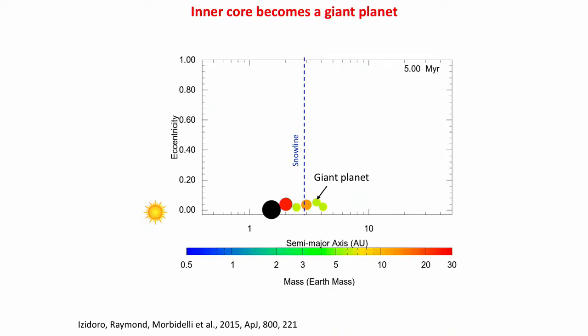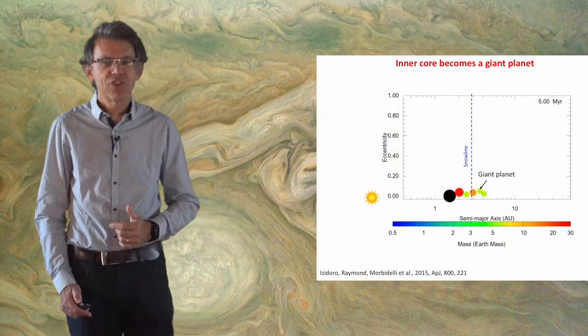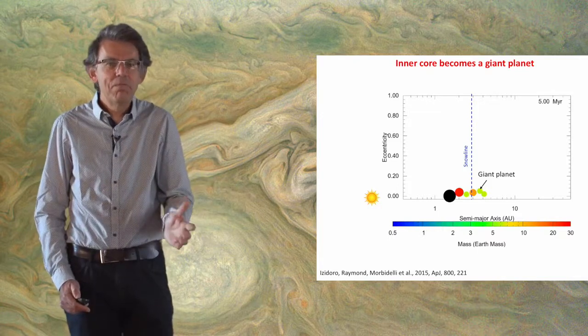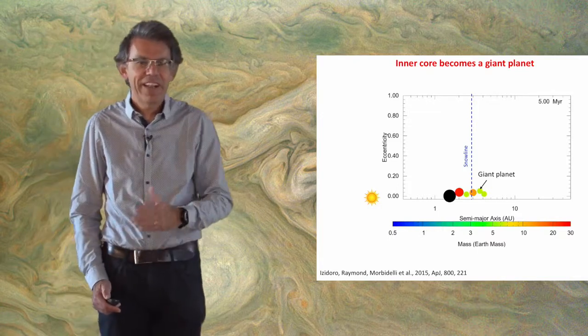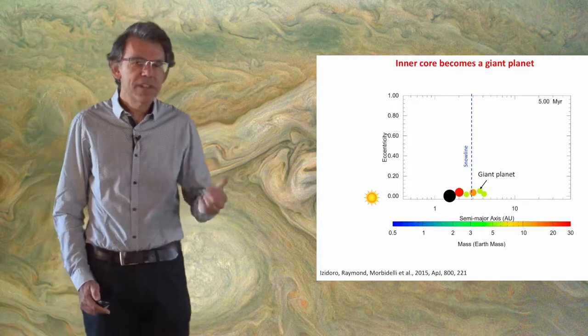This is typical of the extrasolar giant planets that we see, and all the super-Earths are then forced to be behind the orbit of the giant planet. None of them can reach close-in orbits; some of them could, but it's very rare.